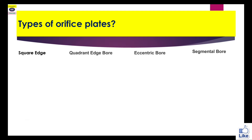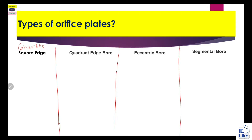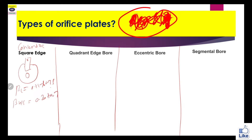Our next point is types of orifice plate. Generally there are four types: concentric square edge, quadrant edge, eccentric bore, and segmental. The concentric square edge is the most used orifice in the oil and gas sector in instrumentation and automation. The beta ratio for liquid is 0.15 to 0.75, and for gas or steam it is 0.20 to 0.70. The beta ratio should be maintained below 0.75 to get accurate flow measurement from the orifice.